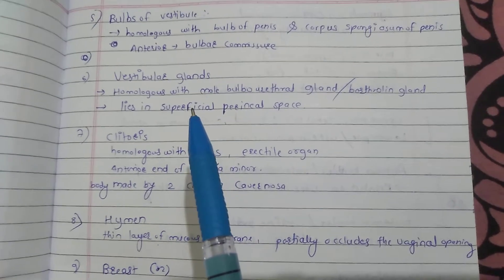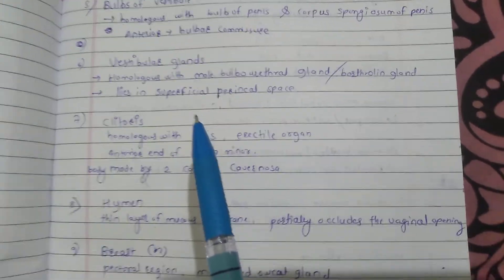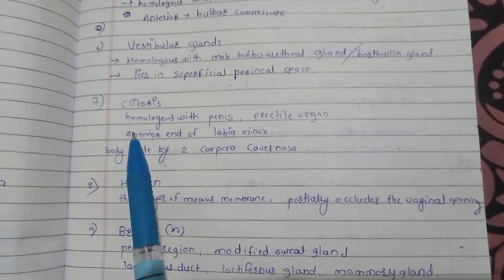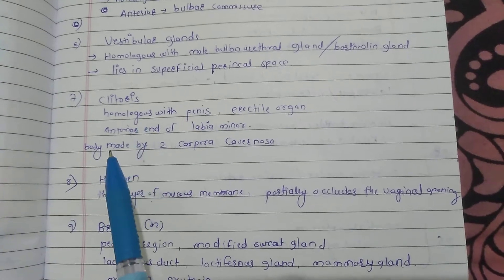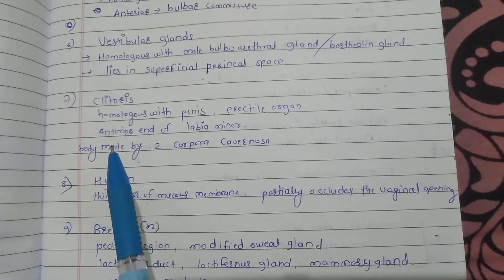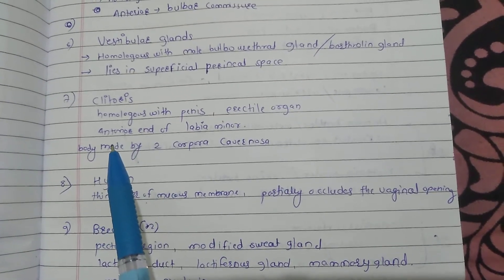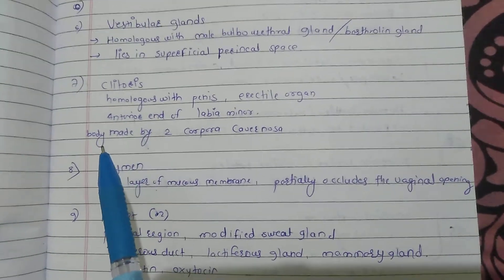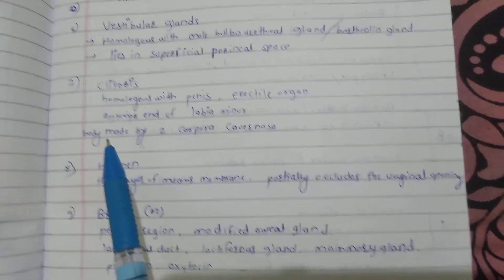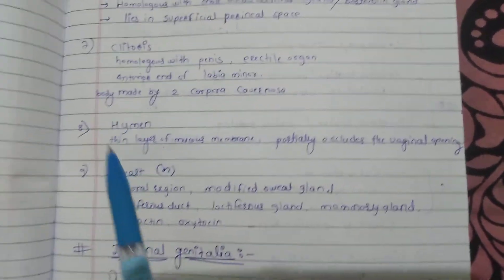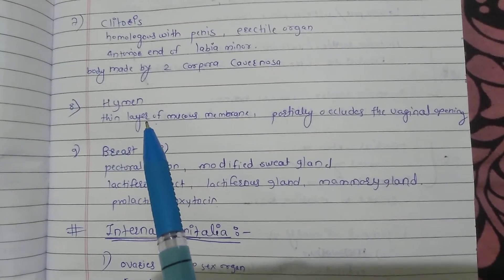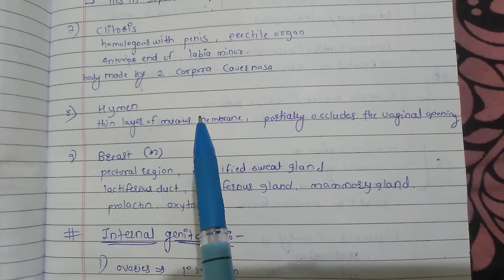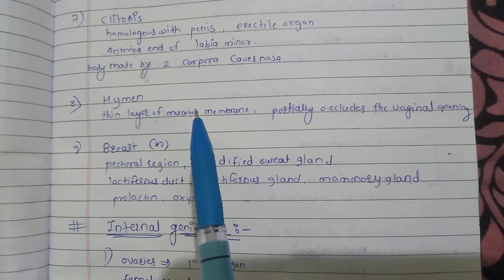The vestibular gland lies in the superficial perineal space. The clitoris is homologous with the penis and is an erectile organ, located at the anterior end of the labia minora. Its body is made by two corpora cavernosa. The hymen is a thin layer of mucous membrane that partially occludes the vaginal opening.